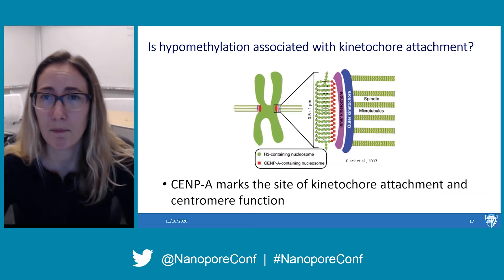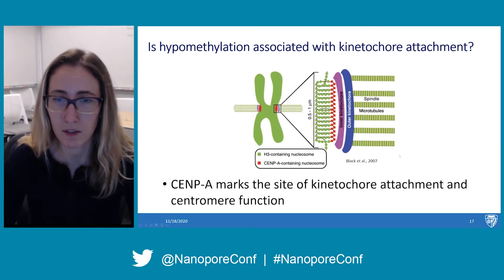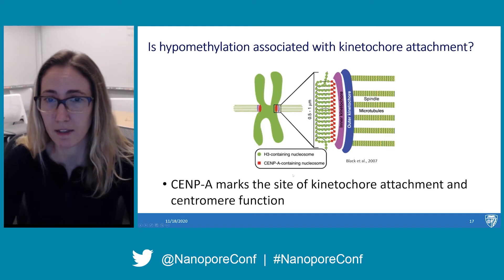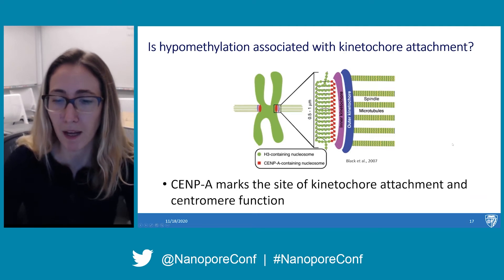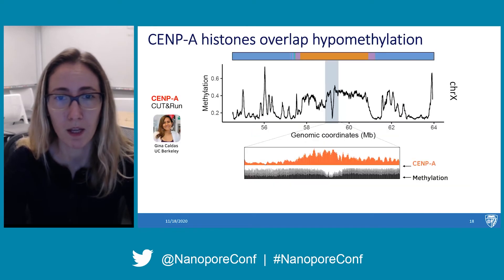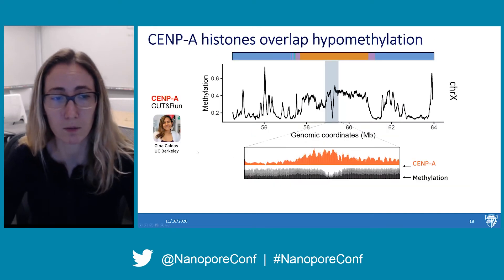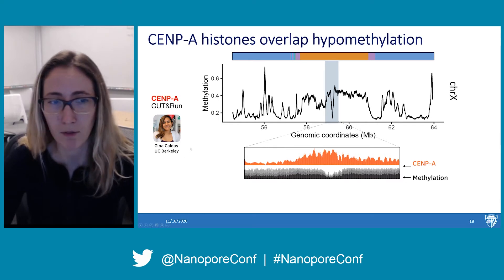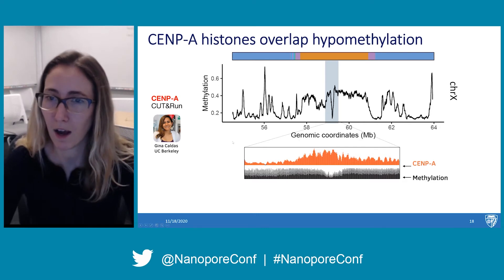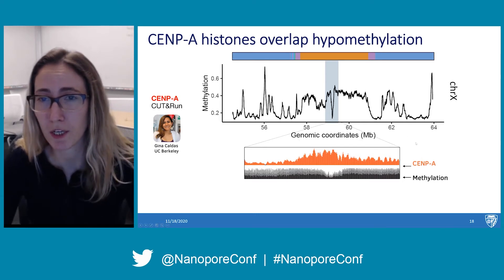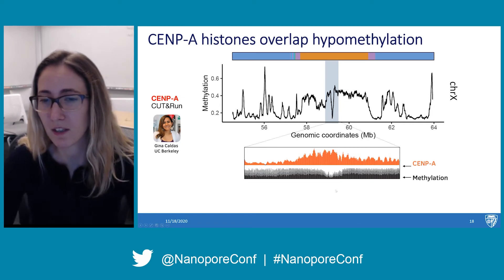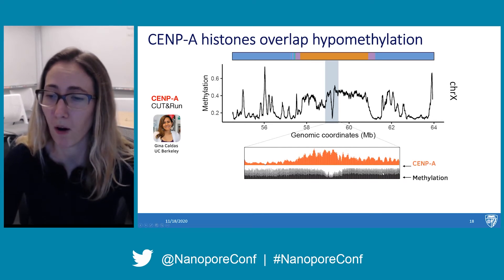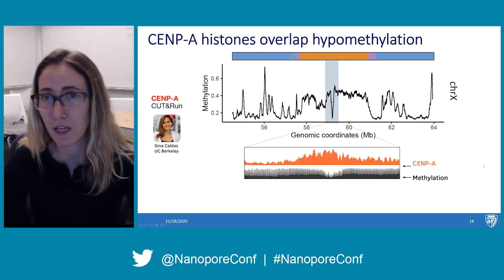Our next question was whether this hypomethylation is associated with kinetochore attachment. CENPA marks the site of kinetochore attachment and centromere function — so is there an overlap between CENPA and this hypomethylation, and does it have some biological role for chromosome segregation? We worked with Gina Caldas from UC Berkeley, who generated CENPA CUT&RUN data mapped by Karen Miga to the centromeric region. We found that overlapping the region of hypomethylation is this enrichment of the CENPA histone, which definitely probes future questions about how this hypomethylation influences centromere activity.